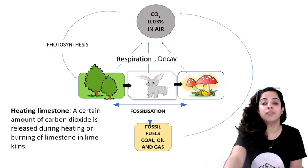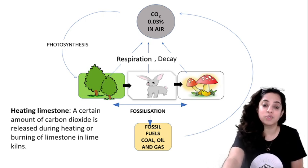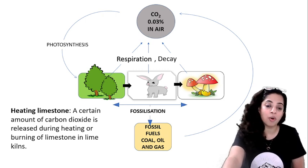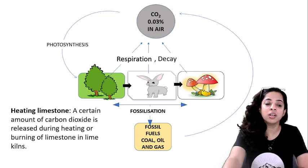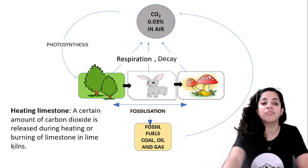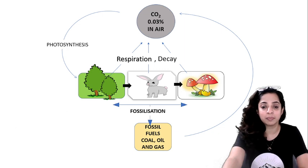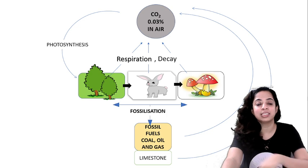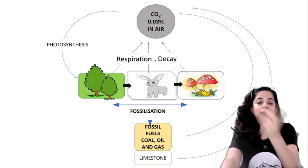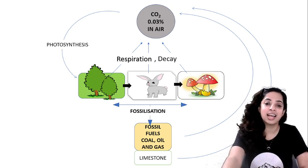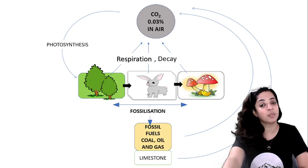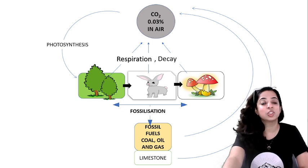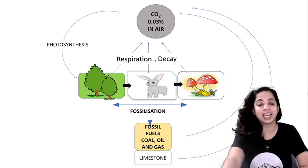Limestone is also formed in a similar way. When limestone is heated or burned — for example, in lime kilns — a certain amount of carbon dioxide is also released into the atmosphere. So this was the whole carbon cycle.